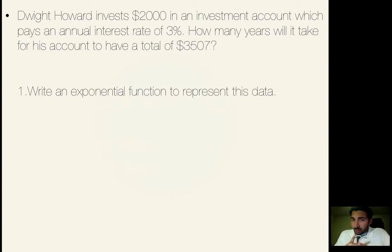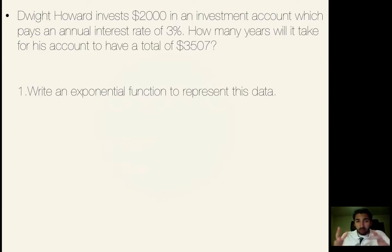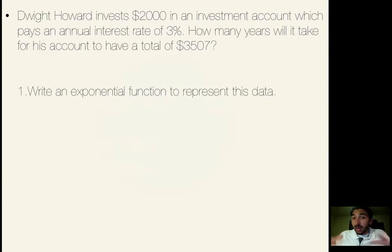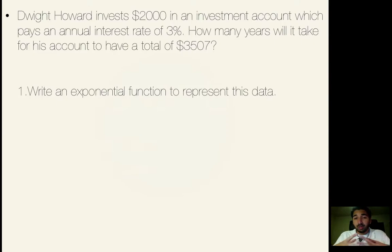This problem is interesting for a few reasons. We know it's a growth formula — specifically an interest growth formula — based on context clues like it pays him an annual interest rate. Usually we're given the rate and the principal (how much was invested), and it tells us the years and asks how much you'll have in X amount of years. However, what they're telling us here is how much he's going to make — asking when will he have a total of $3,507 in his account.